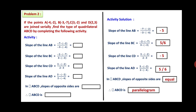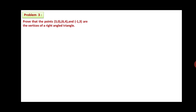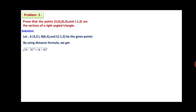Now we will discuss problems for question number 4 and 5. Prove that the points (3, 0), (6, 4), and (-1, 3) are the vertices of a right-angle triangle. Let A(3, 0), B(6, 4), and C(-1, 3) be the given points. By using the Distance Formula: AB = √[(6-3)² + (4-0)²] = √[3² + 4²] = √[9 + 16] = √25 = 5. Squaring both sides: AB² = 25, statement 1.